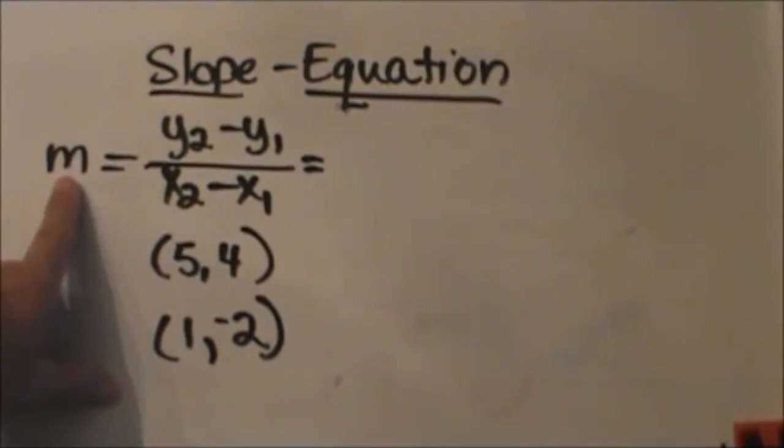Why does m represent slope? Some mathematician made that up, but I always relate it to a mountain. If you see m, m is for mountains and mountains have slope.